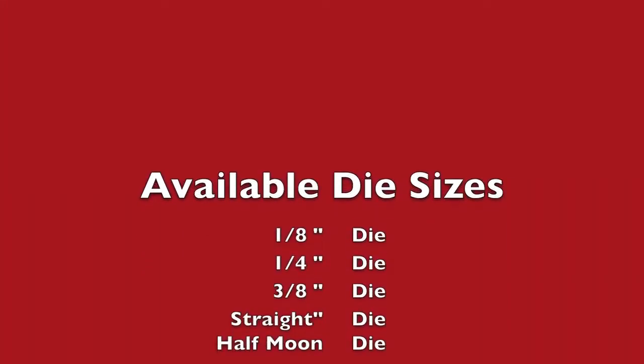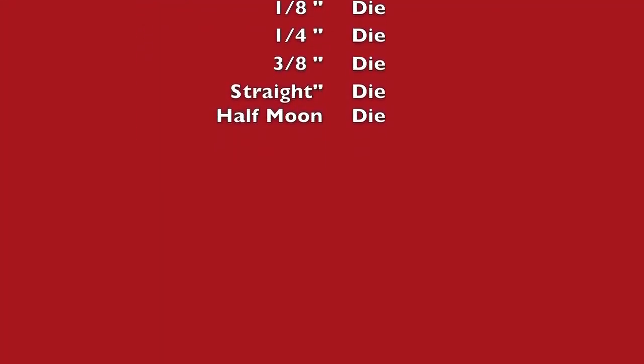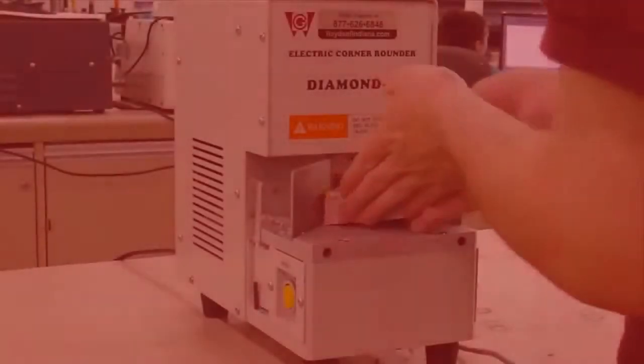Bloods of Indiana carries three models of the Achilles Round Cornering Machines including the Diamond 5, Diamond 6, and Diamond 7.